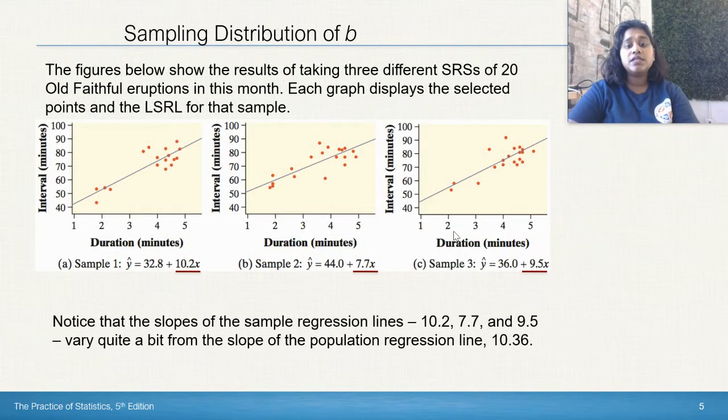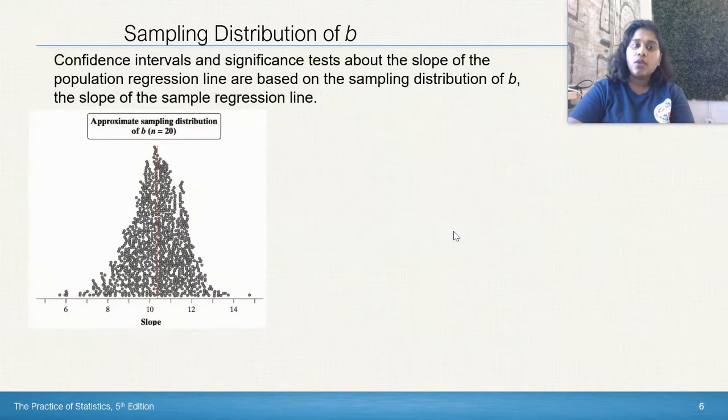We notice that the slopes of the sample regression line, 10.2, 7.7, and 9.5, vary quite a bit from that original population of 10.36. 10.2 is close, 9.5 is close, but 7.7, where the heck did that come from?